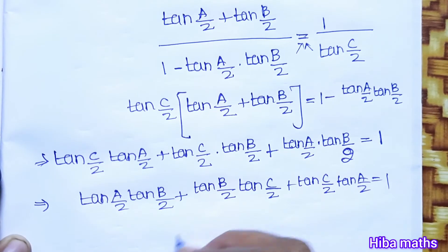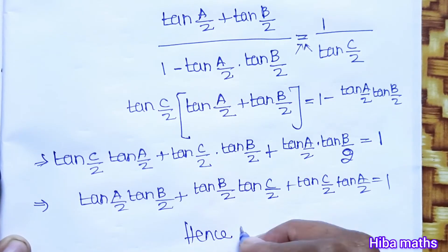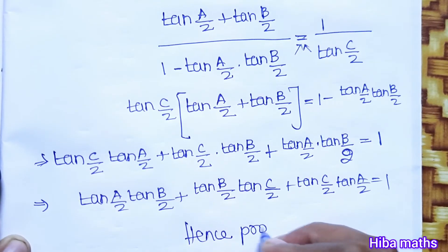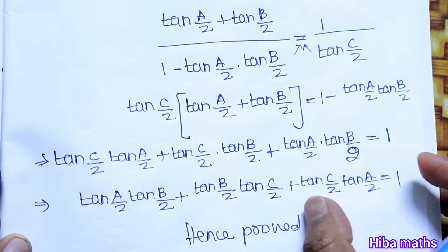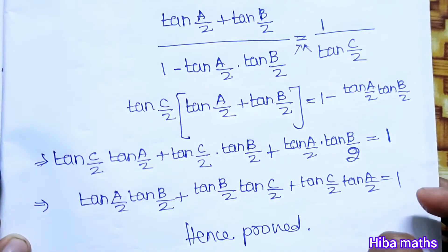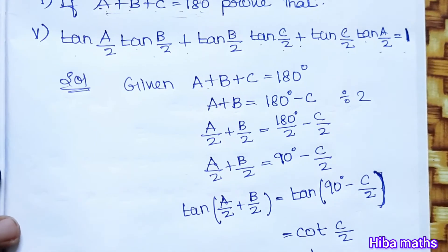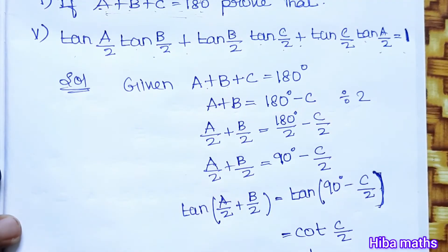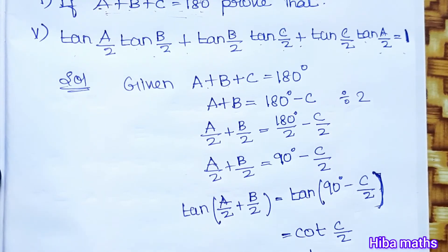Hence proved. It's a very easy sum. We have to solve the LHS and RHS using the given conditions. There is a method of solving — starting from the given condition is key to approaching this question.